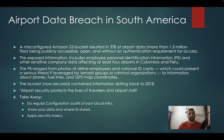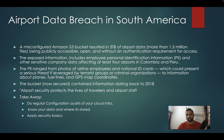Similarly, there's another breach — this time on an Amazon S3 bucket that was left open due to a configuration issue. This data belonged to some airports in South America. At least four airports are known to be impacted, some in Colombia and Peru. The breached data includes photos of airline employees and their national ID cards, and also contains planes, fuel lines, and GPS map coordinates. This is a serious threat if leveraged by a criminal organization. The bucket was not secured but it has since been fixed.